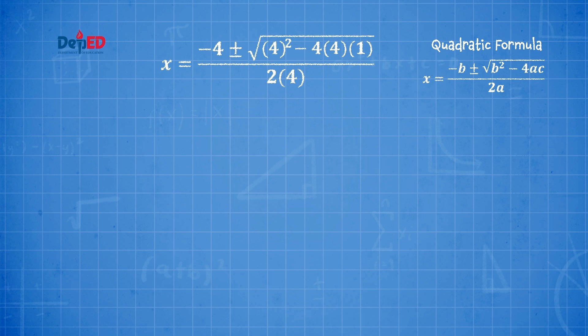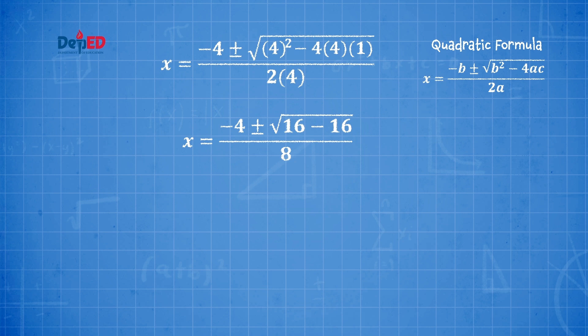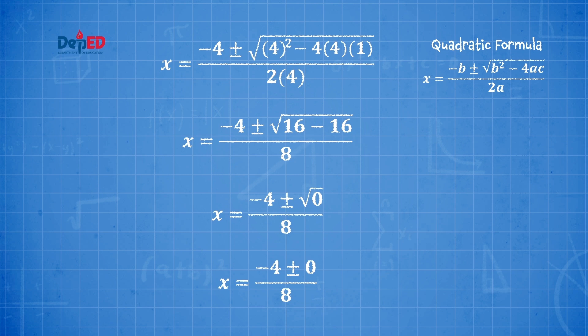x = (−4 ± √(4² − 4·4·1)) / (2·4). Then we simplify. The expression under the radical sign is 16 − 16, because 4² = 16, decreased by the product of 4, 4, and 1, which is also 16. The denominator becomes 8 because 2 × 4 = 8. We show that 16 − 16 = 0, so 0 appears under the radical sign. Since √0 = 0, the numerator is now simplified as −4 ± 0.